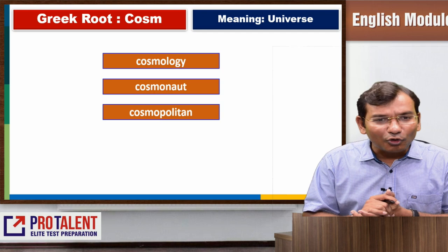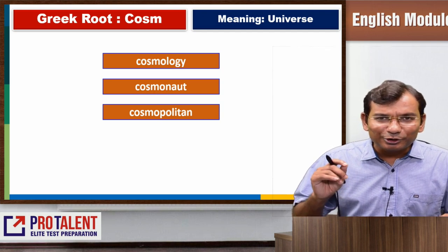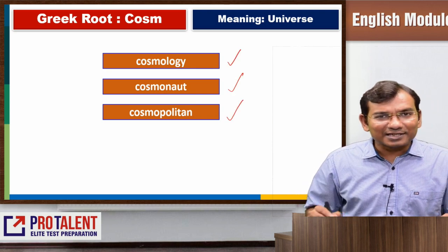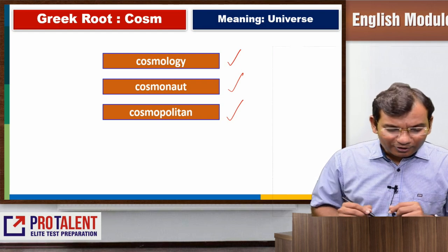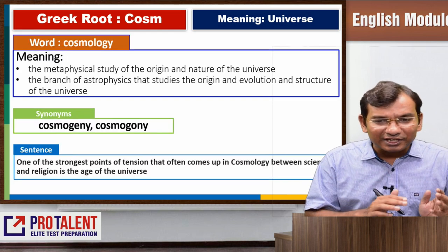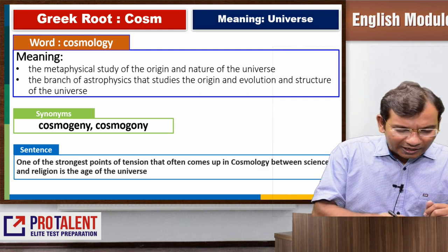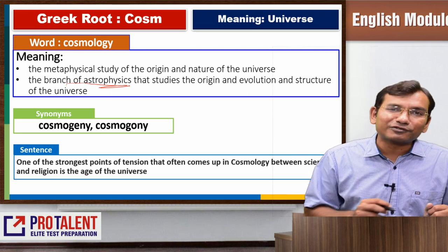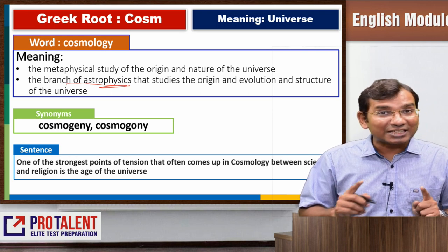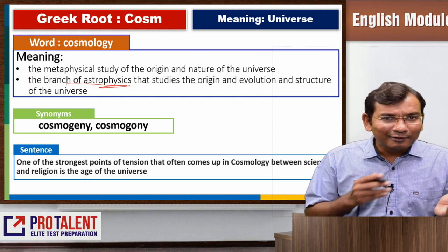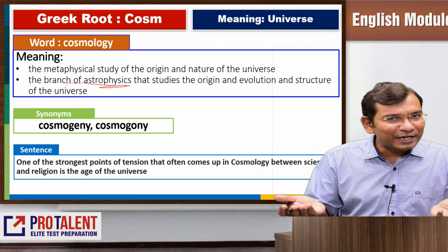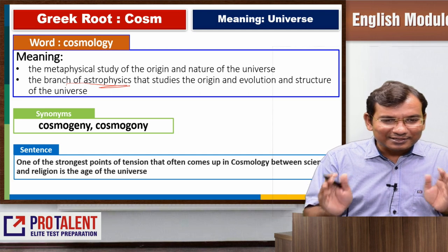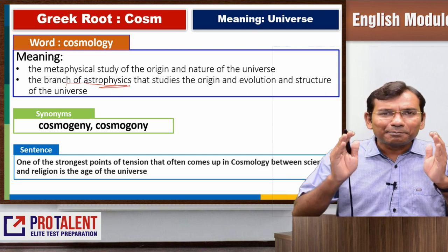Next root is called Cosmo or Cosm, which refers to universe. The words are cosmology, cosmonaut, and cosmopolitan. Cosmology is basically a study of the universe — it is a branch of astrophysics that studies the origin, evolution, and structure of the universe. The American term is astronaut and the Russian term is cosmonaut — the meaning is the same, just the country is different.